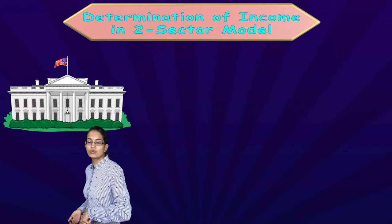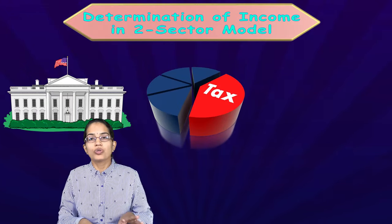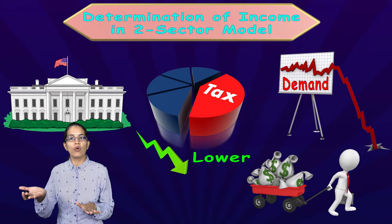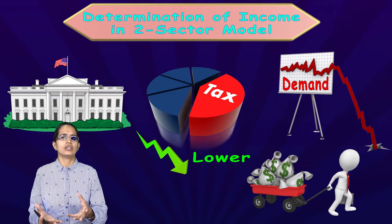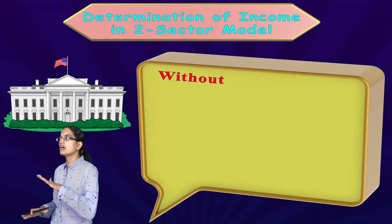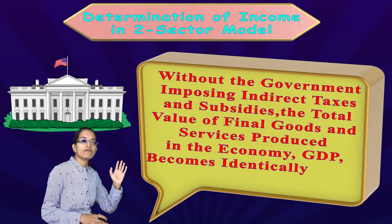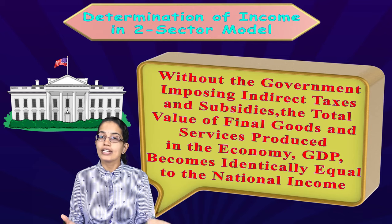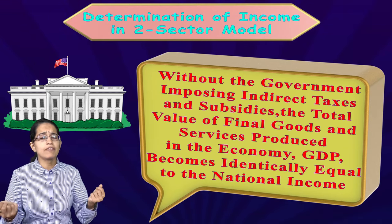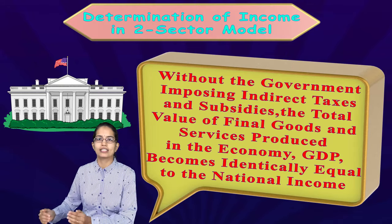The government has a major role in controlling inventory imbalances through taxation. If demand goes down, lowering taxes makes people spend more. Without government imposing indirect taxes or subsidies, the total value of final goods and services in the economy — reflected as GDP — would be identical to national income. This is a very important concept that helps us understand equilibrium in the long run and short run.